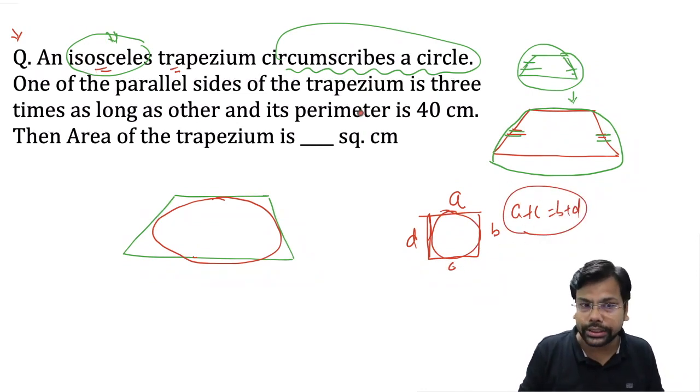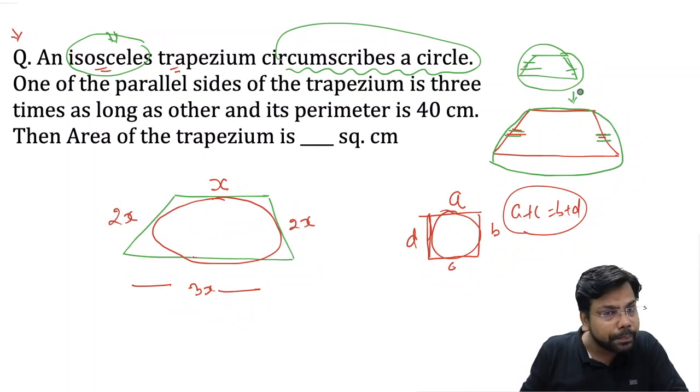Now the question is, we have isosceles trapezium. One side is thrice the parallel side. If I say this is x, then this is 3x. The summation of top and bottom is equal to these two. In isosceles trapezium, the summation is 4x, so this will be 2x and this will be 2x.